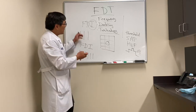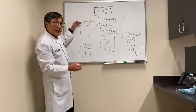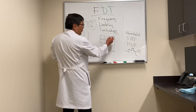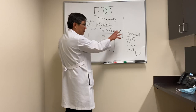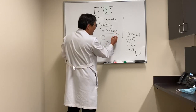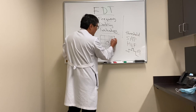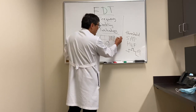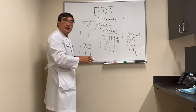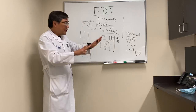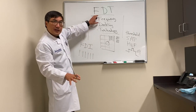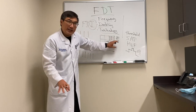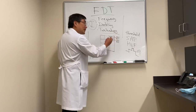In FDT testing, you're taking advantage of the frequency doubling illusion. By changing the frequency, we can induce a doubling illusion. When testing this square — analogous to testing a spot on Humphrey visual field — the patient will see six of these gratings, even though it's really just a combination of two different sets of three that are counterfacing. That flicker is what creates the illusion of six, even though there are only three. That is frequency doubling technology.